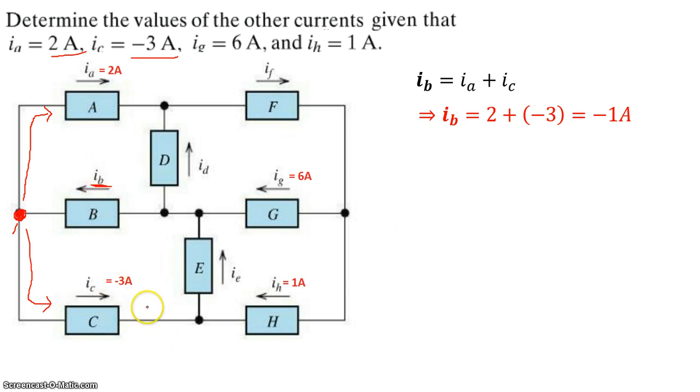Now, let's take a look at this node right here. At that node, the currents coming in are IC and IH, and the current leaving the node is IE. So using KCL again, the sum of the currents coming in, IC plus IH, should be equal to IE. IE can now be calculated as negative 2 amps.